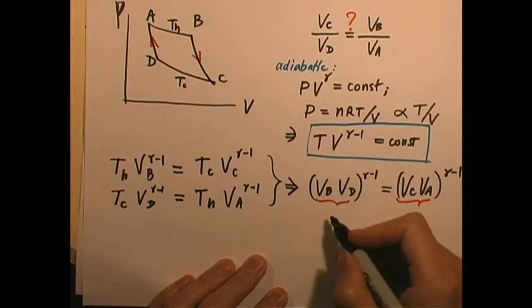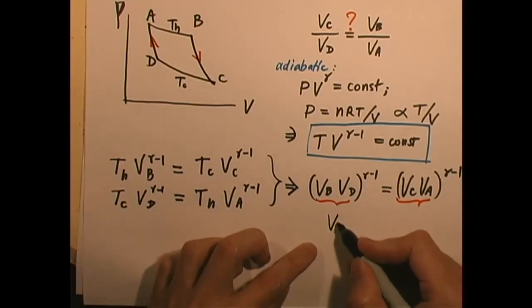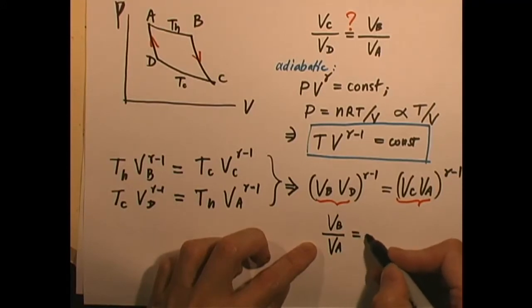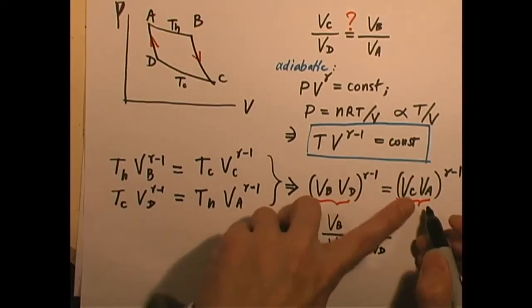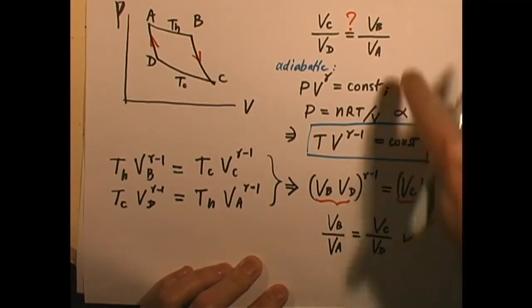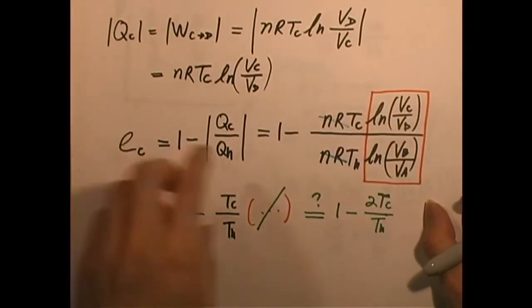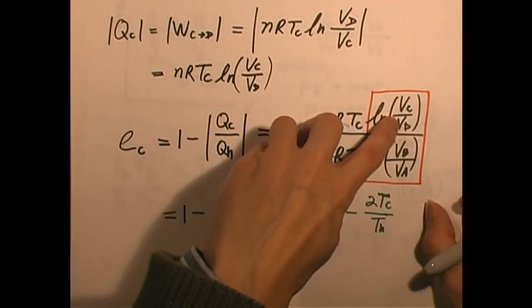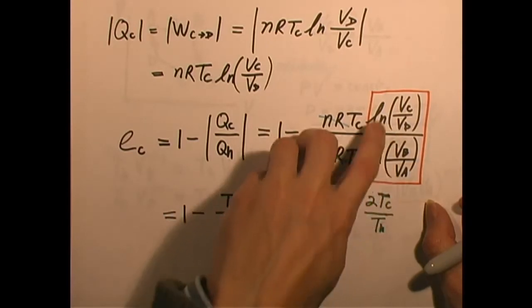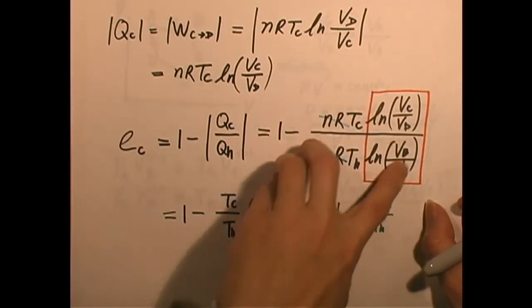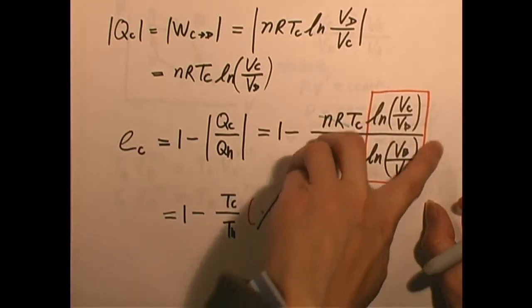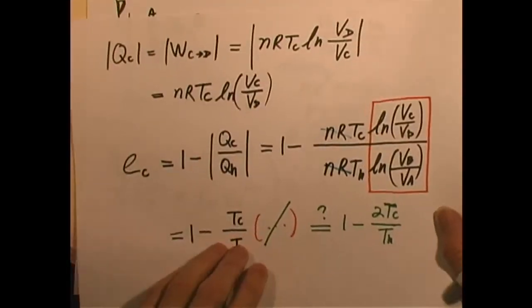Forget about the power gamma minus one because they're the same on both sides. So Vb times Vd equals Vc times Va. Therefore, Vb over Va indeed equals Vc over Vd. So this is correct.